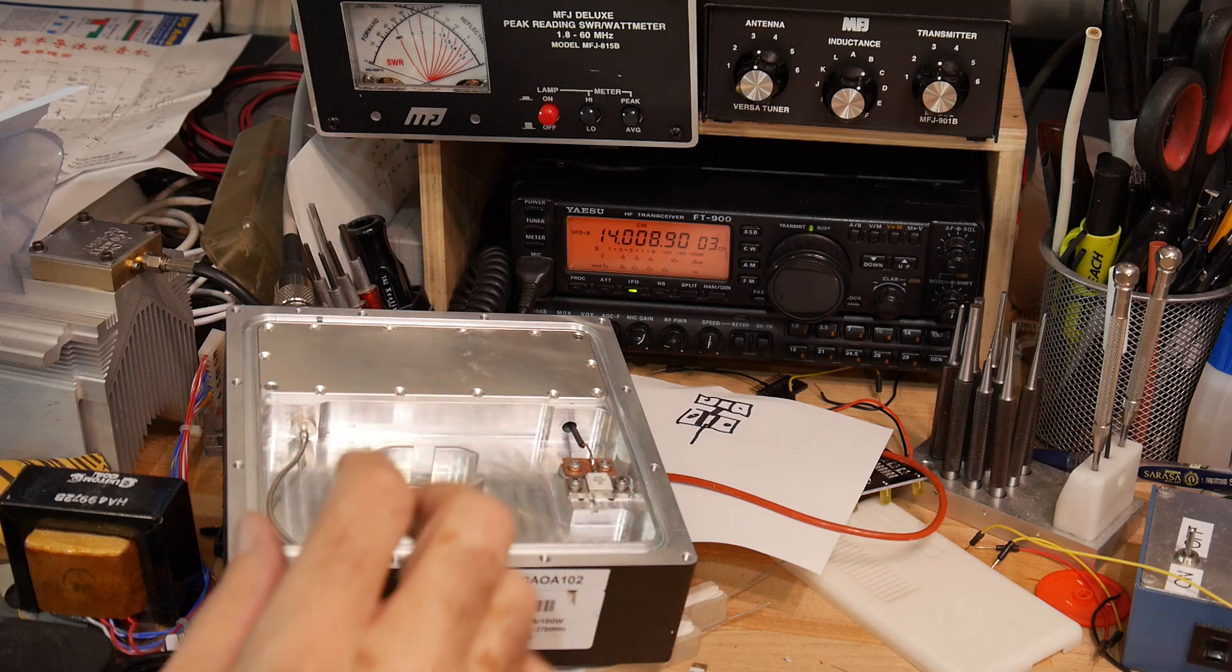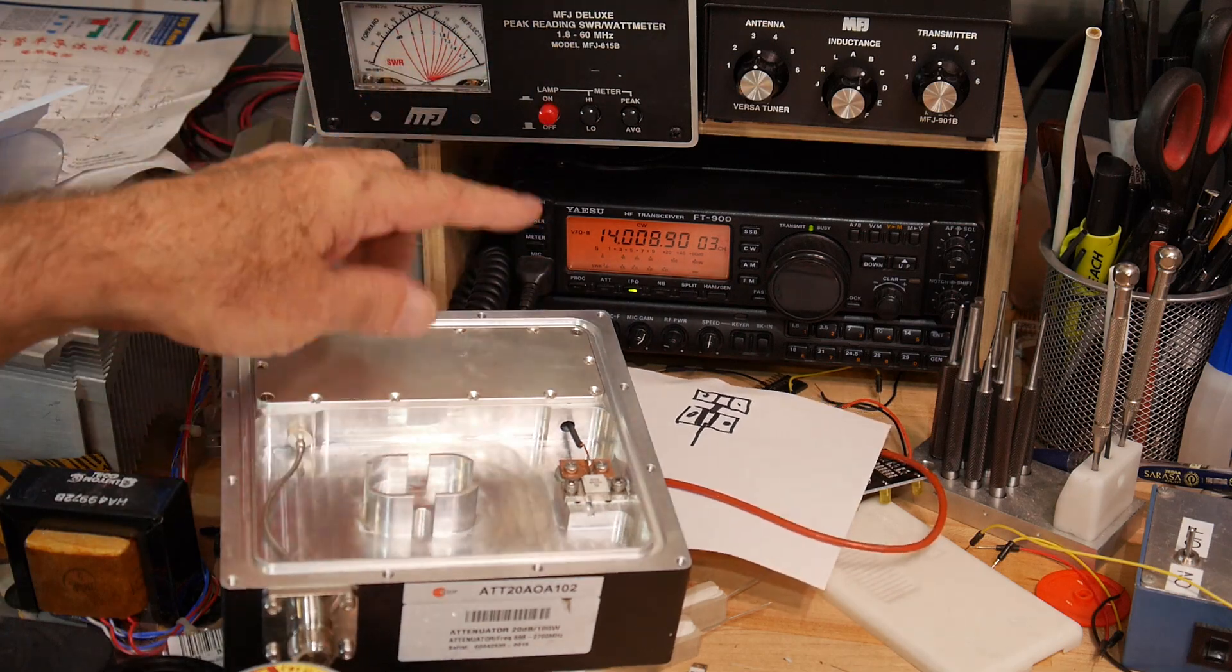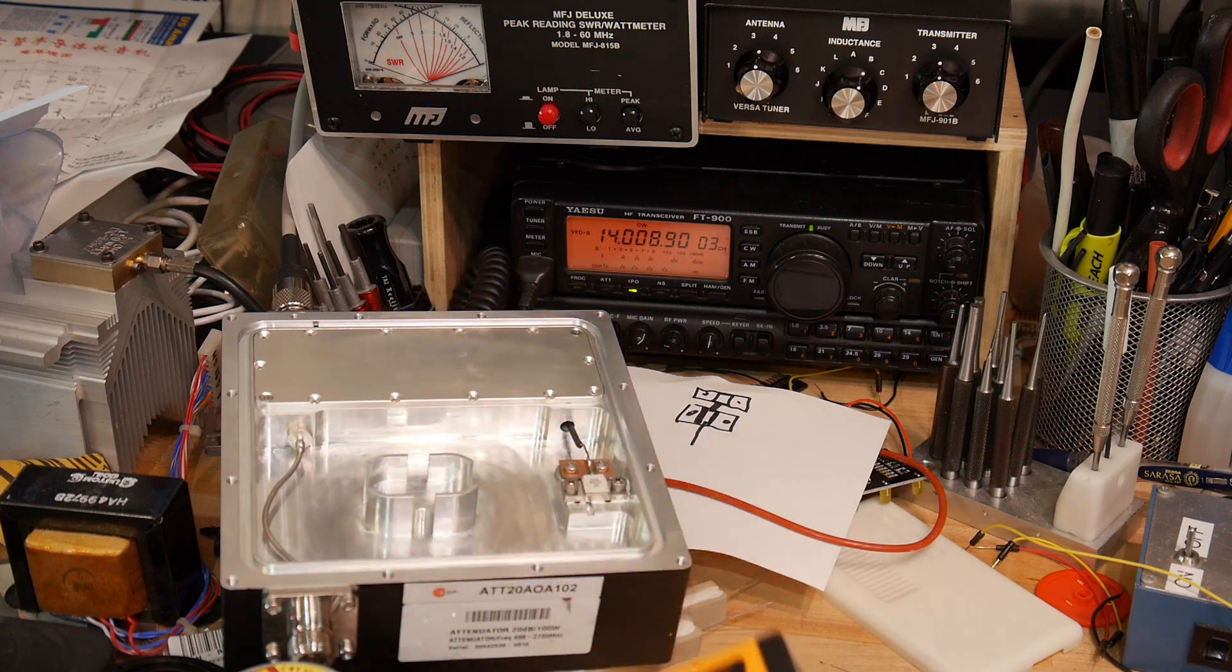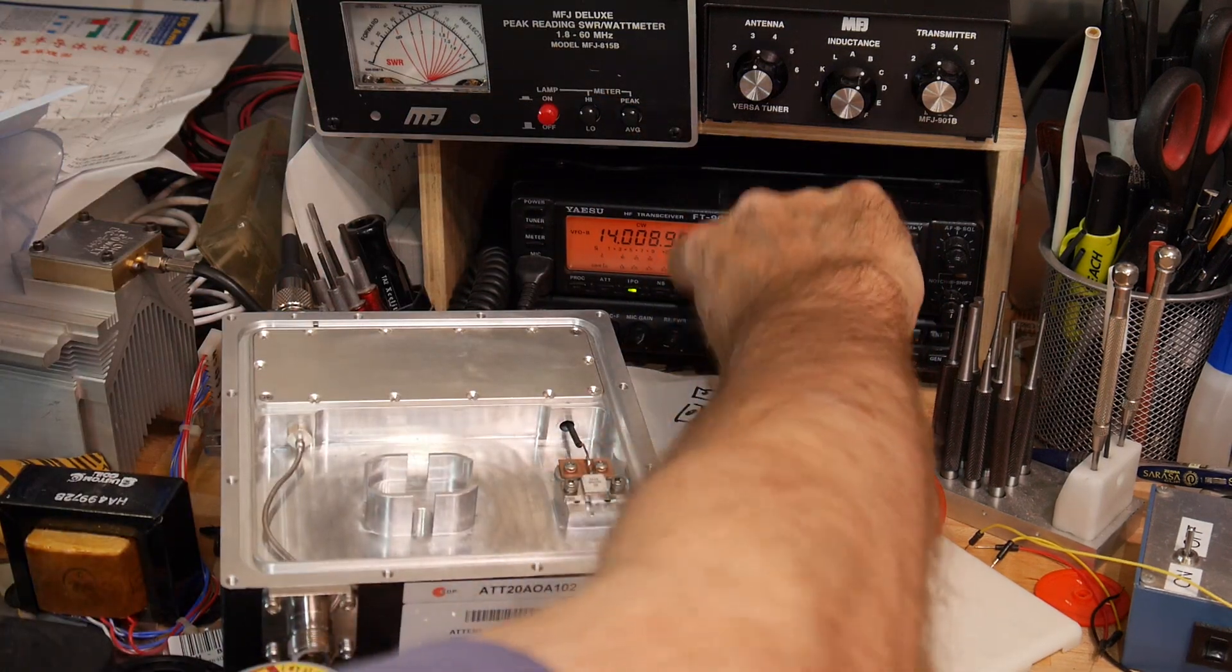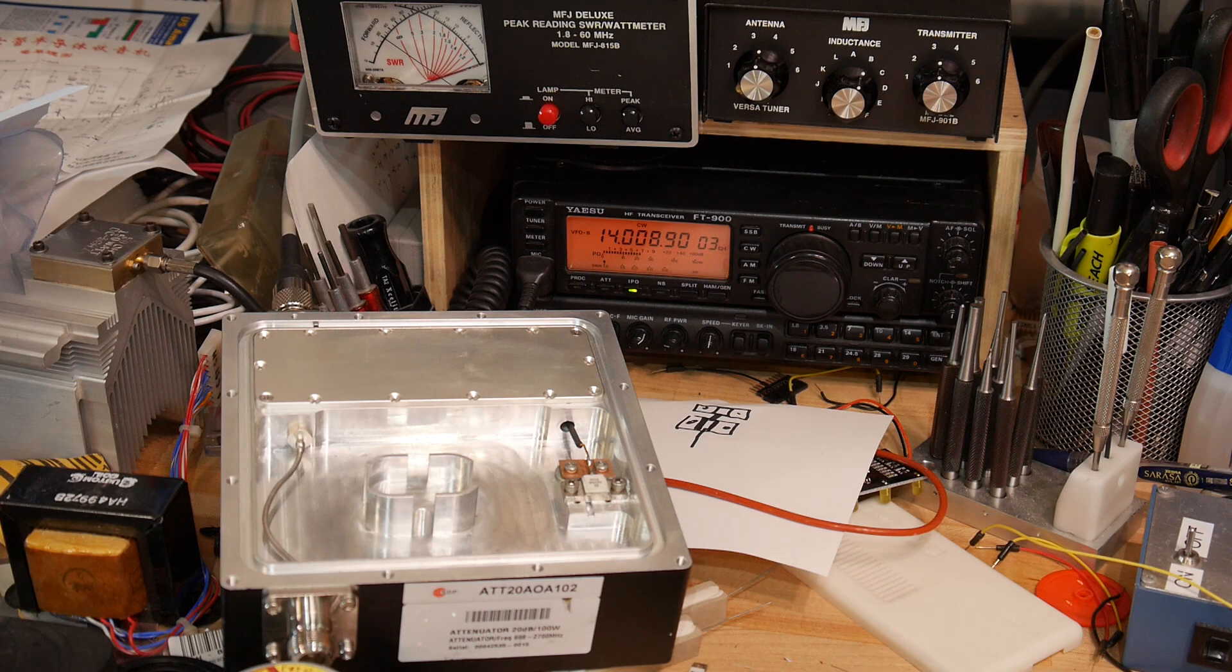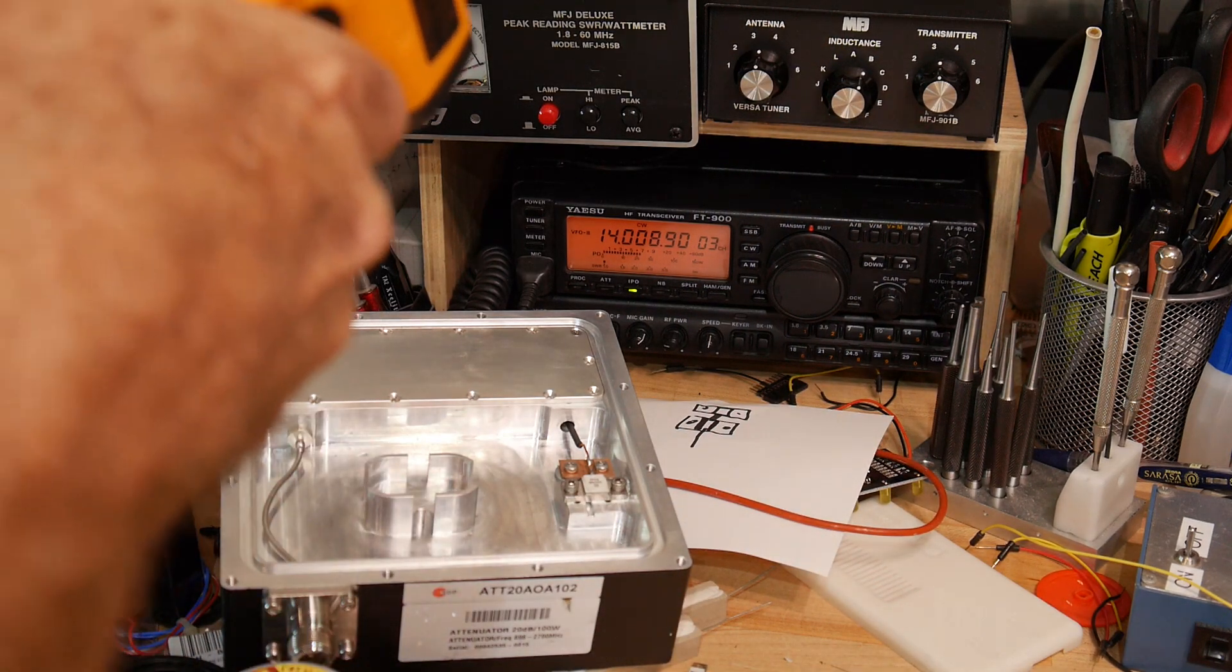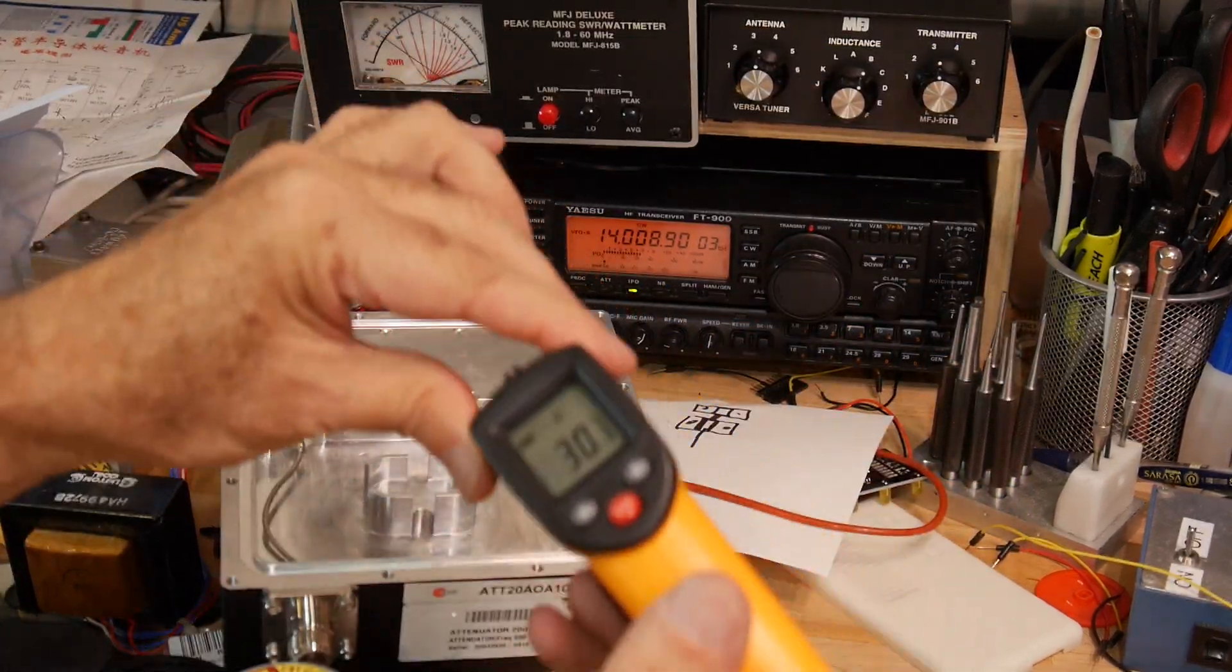Alright, before I put the lid on I figured I'd try it out. I hooked it up to my Yaesu radio over here. This watt meter's in the line so we can watch how much power's coming out. It's going through that coupler and into the load resistor. I've got an infrared thermometer. Let's turn it on. We've got 20 watts right now on CW 14 megahertz, outputting about 20 watts.